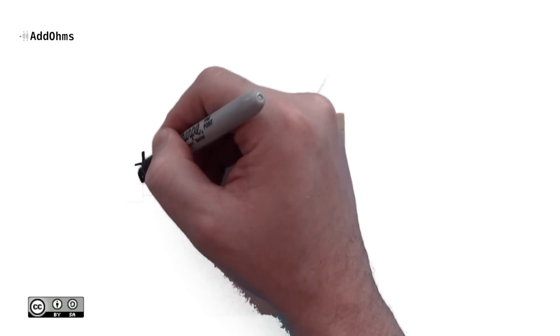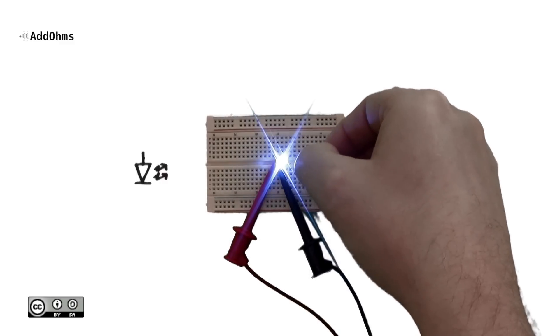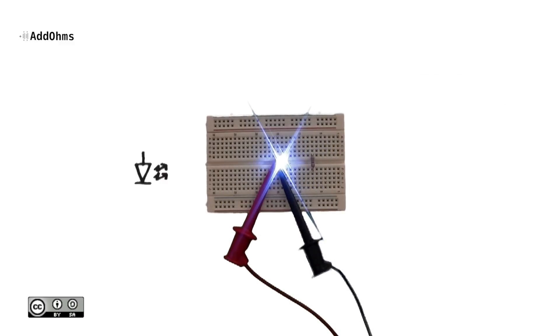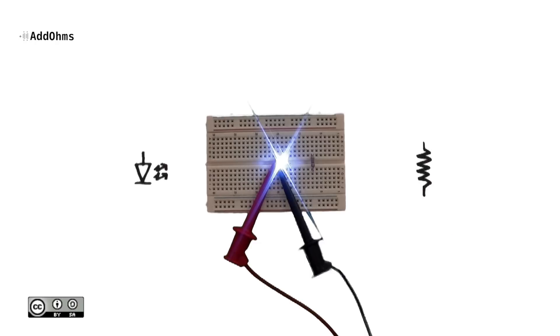Every project is made better by adding LEDs, but you can't add an LED without something to limit the current like a current limiting resistor. In this round of AddOhms, we're going to talk about how resistors and LEDs work and why you need to use them together.